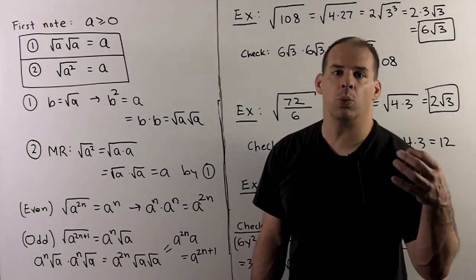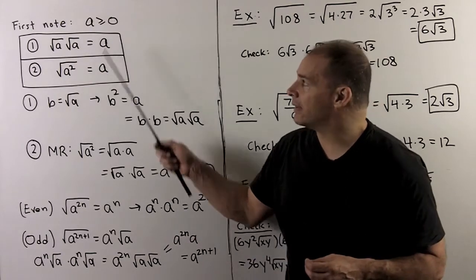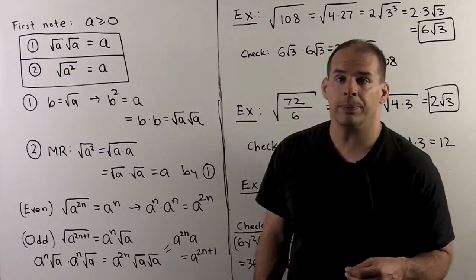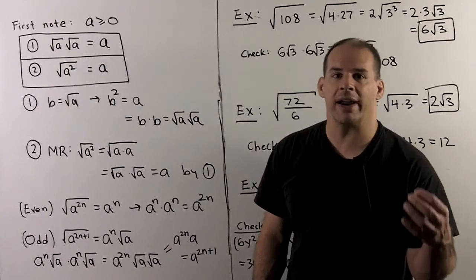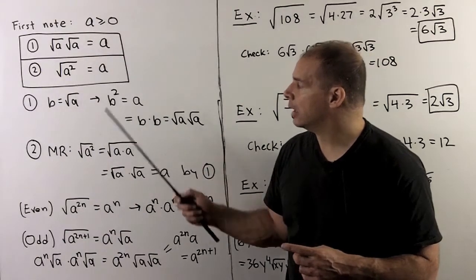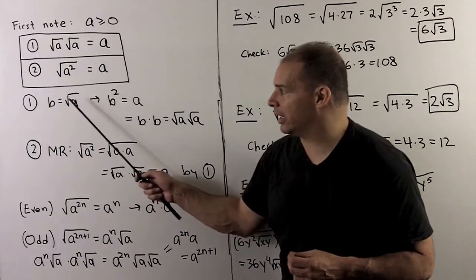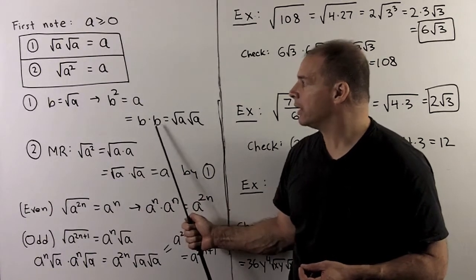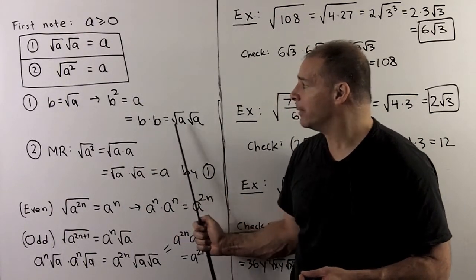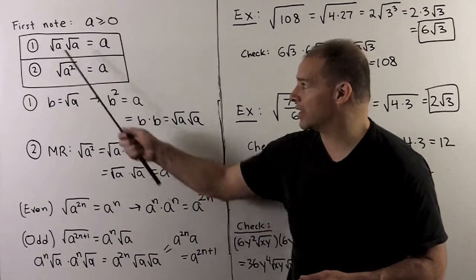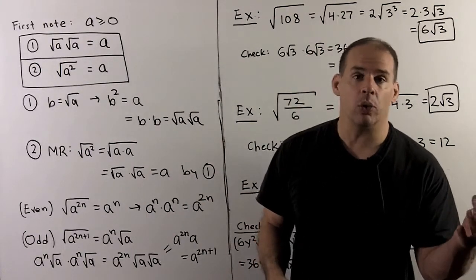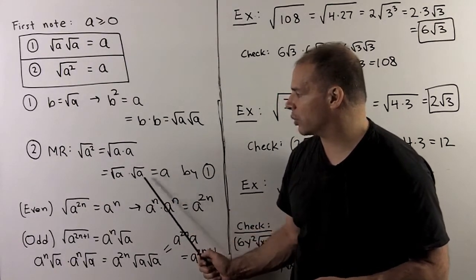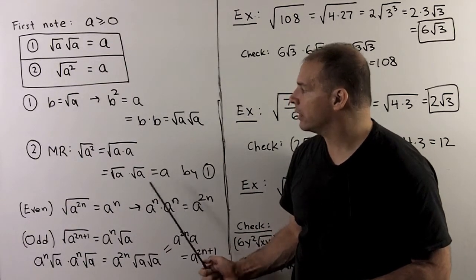Before showing the exponent rules formally, two warm-ups. For a greater than or equal to zero: square root of a times square root of a equals a, and square root of a squared also equals a. Think of these as saying that square root and squaring cancel each other out in either order. For the first rule: since b equals square root of a means b squared equals a, and b squared equals b times b, substituting square root of a gives a equals radical a times radical a. For the second rule, we apply rule one: square root of a squared — since a squared is a times a, we break it up as square root of a times square root of a, which equals a.